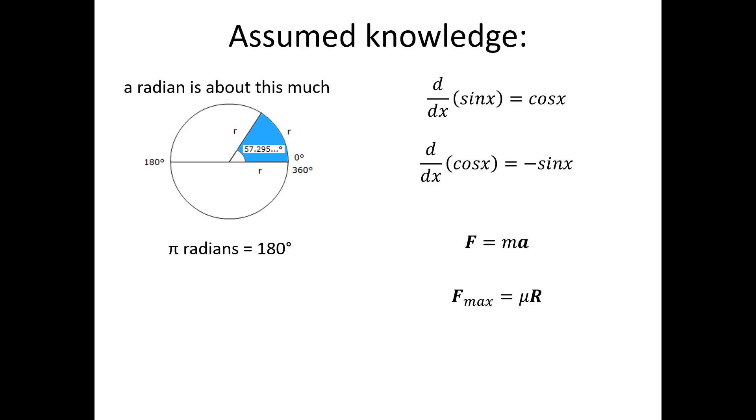I'm assuming you know about radians, how to differentiate sine and cos x, and a bit about mechanics. In particular, that force equals mass times acceleration, and that the maximum friction in a mechanical situation is μ, the coefficient of friction, times r, the normal reaction force. It will also help if you know the chain rule for differentiation.